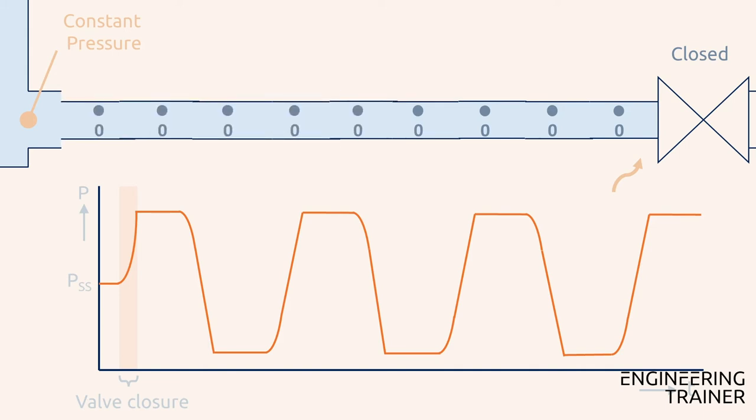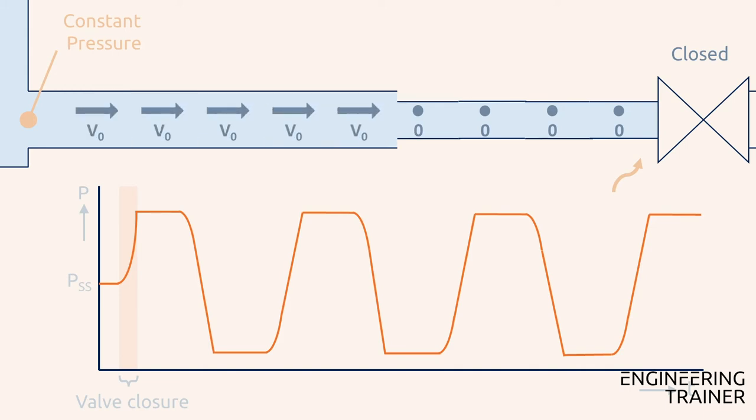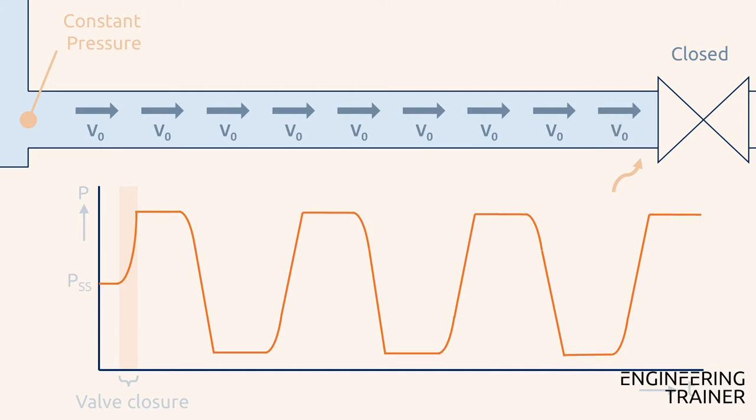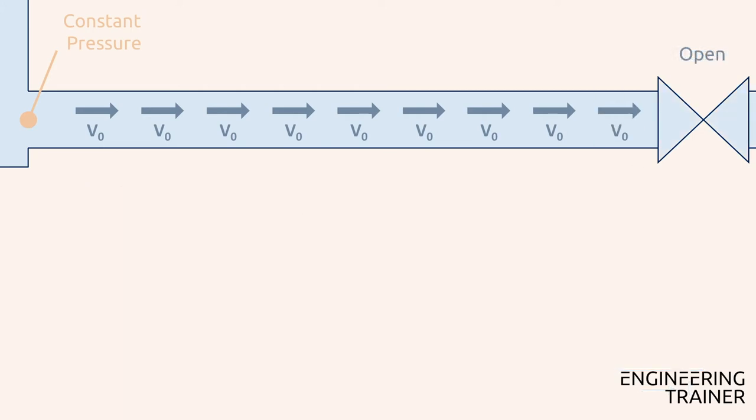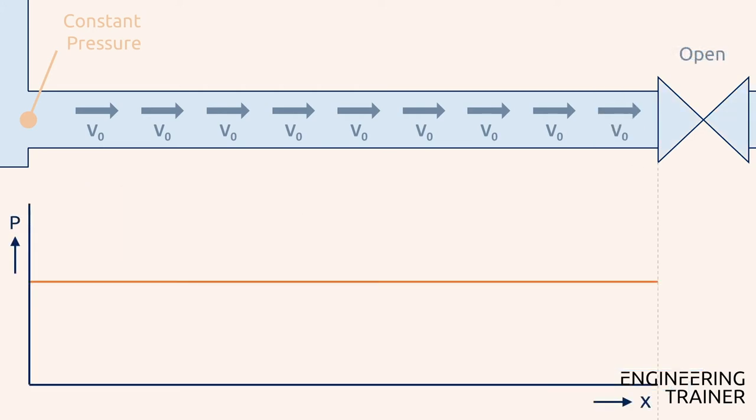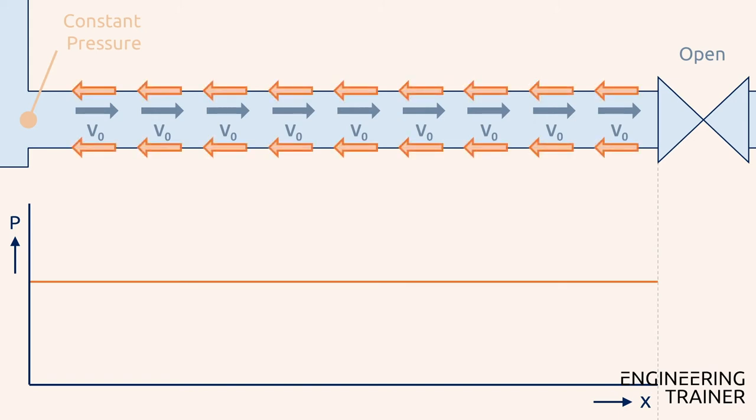To do so, we go back to the initial situation with the valve open and the previously shown pressure profile. Now we will factor in the friction forces which work in the direction opposite to the flow. The flow through the pipe now has to overcome the friction, which results in a loss of pressure.